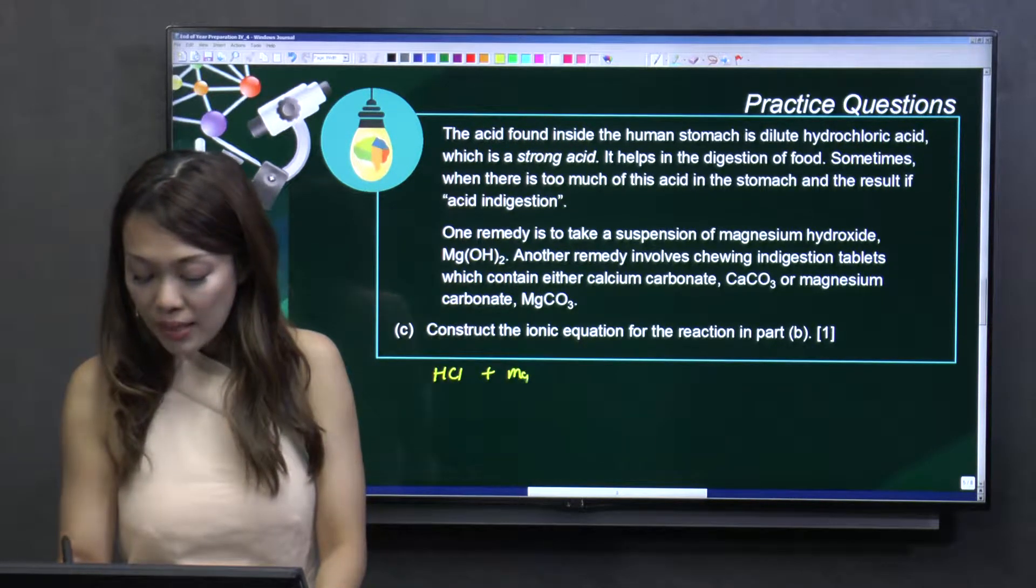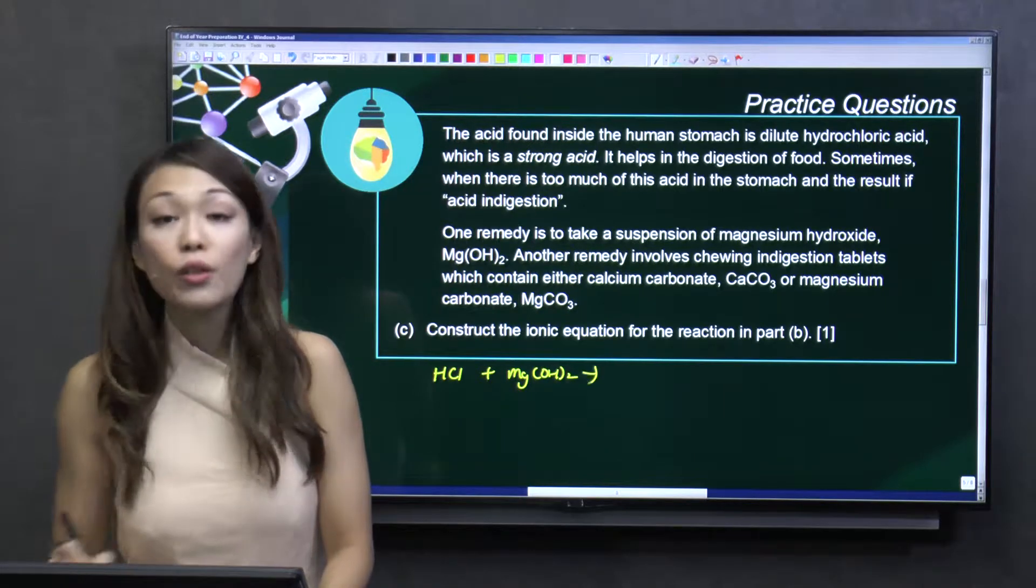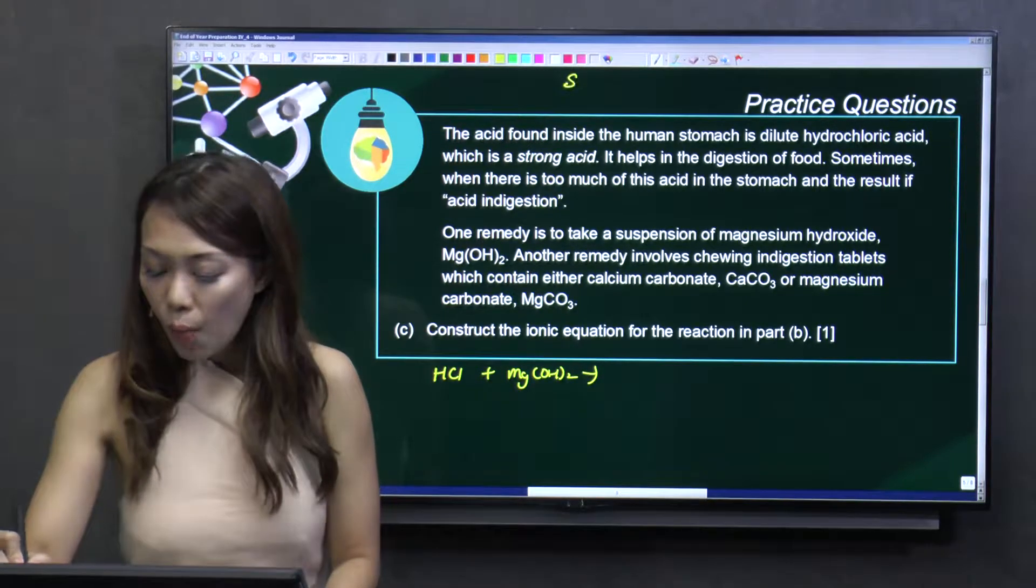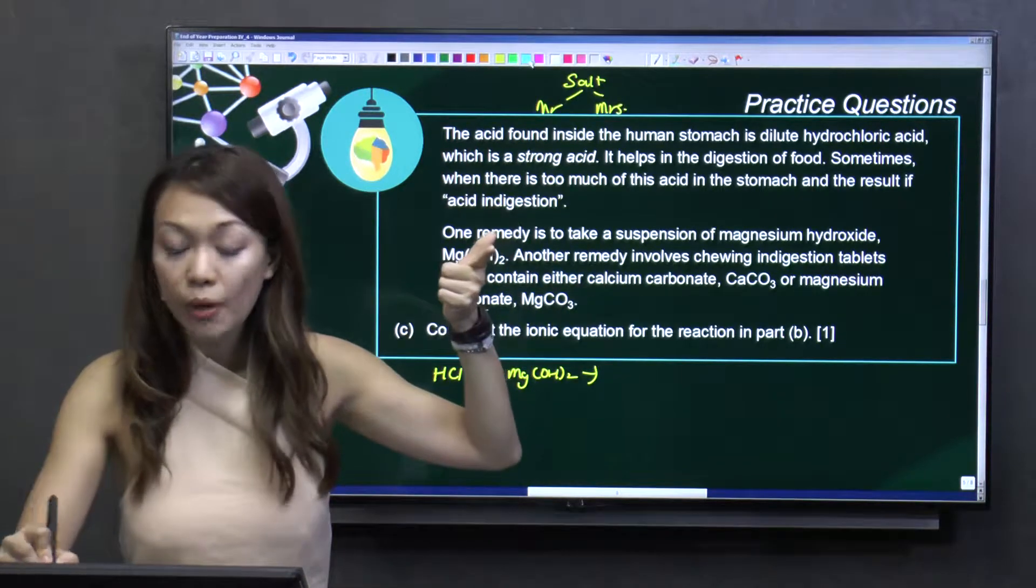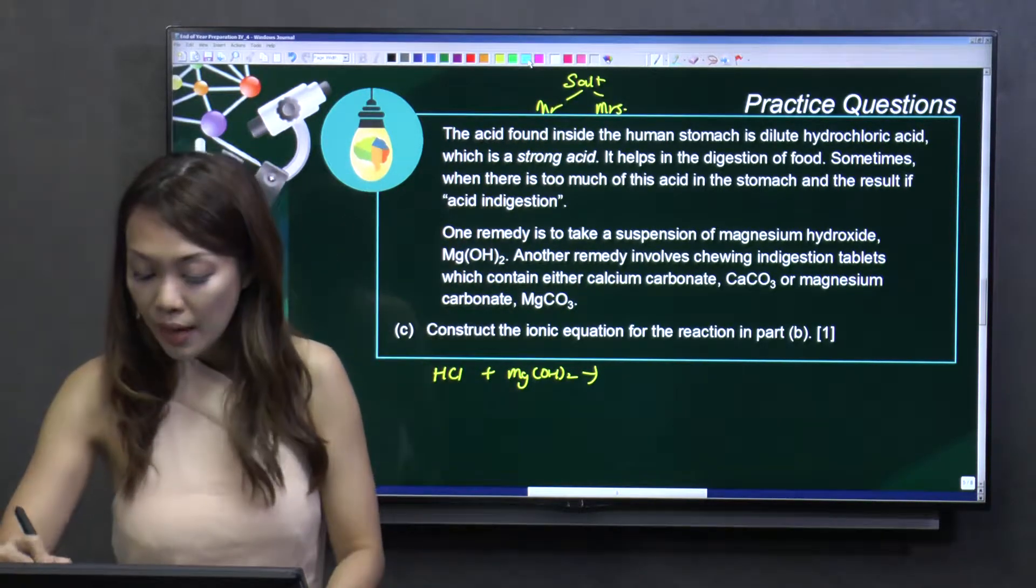HCl will react with magnesium hydroxide. You'll form a salt. Let's recall what is a salt. Salt is a what? A mister and a missus. Very good. The mister comes from where? Your metal. Who is the metal here? Mg.